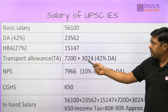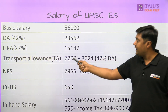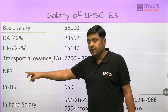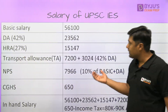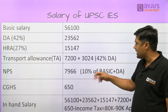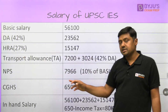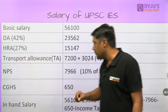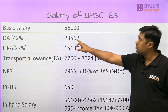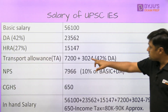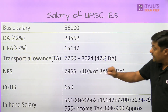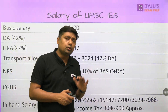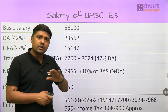TA is 7,200 plus 42% DA on that, which is 3,024. These are the components to be added. For deductions: NPS (for your pension) is 10% of basic plus DA, which is 7,966. CGHS — Central Government Health Scheme — is 650 per month. There will also be a deduction for income tax and some small deductions. Adding all components and subtracting deductions, you are going to get around 80,000 to 90,000 in hand.